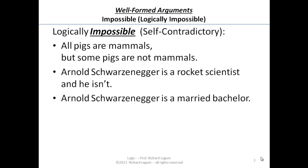These are examples of what we mean when we say something is logically impossible. And what our definition of validity says is that it's impossible in a valid argument for the premises to be true and at the same time the conclusion to be false. That is, it would be contradictory to say the premises are true and the conclusion is false.